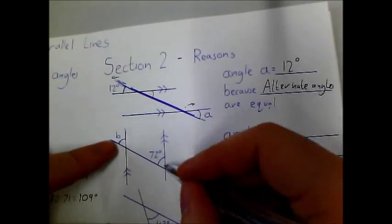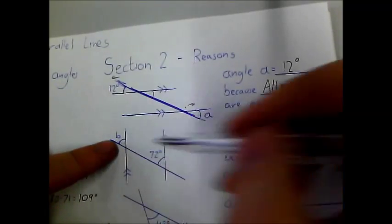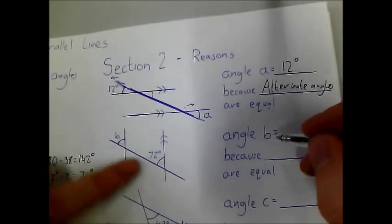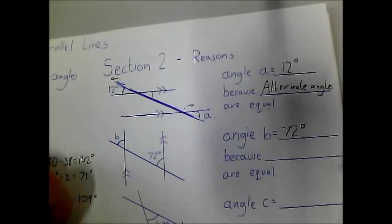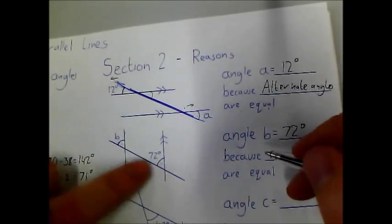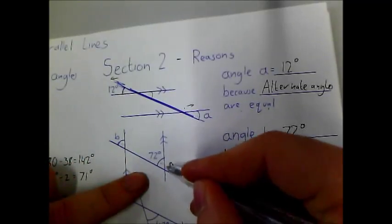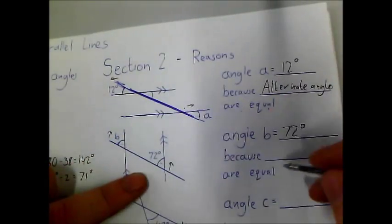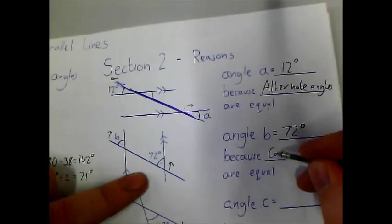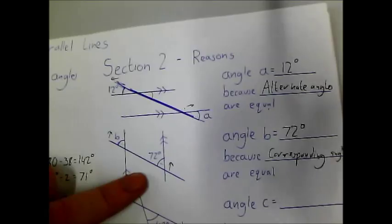Angle B. Are these the same? It's the top left and the top left, so yes they are. Angle B is 72. The reason is that they are corresponding angles — they're on the same side, both in the upper position. Corresponding angles are equal.